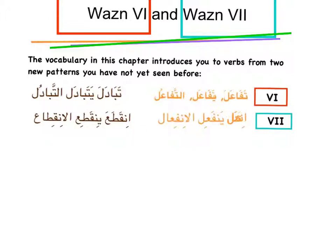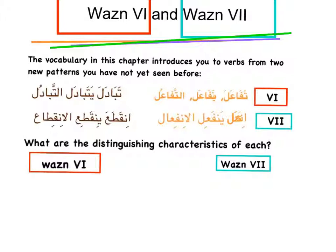A trick to help you remember wazn 7: the number 7 in English and fa'ala wazn 7 both have a 'noon' — 7 has it visually and in-fa'ala has 'noon' in it. Now we're going to look at the distinct characteristics of each of wazn 6 and wazn 7.